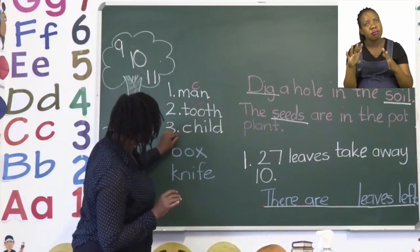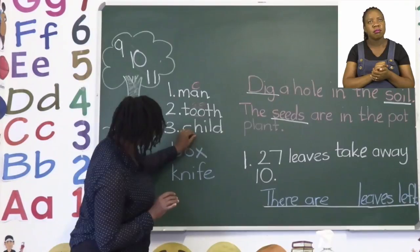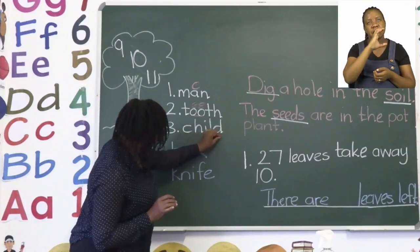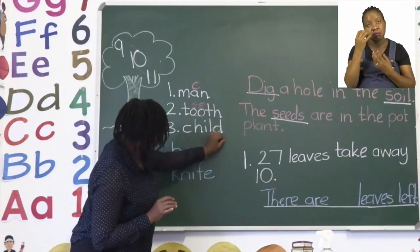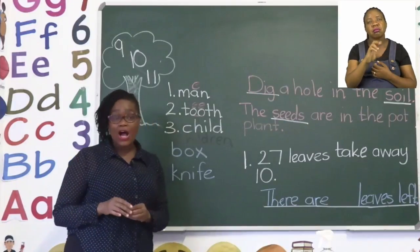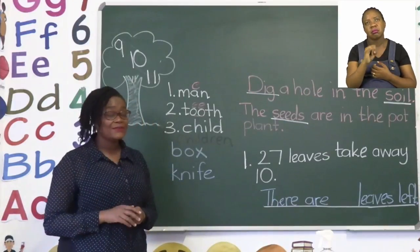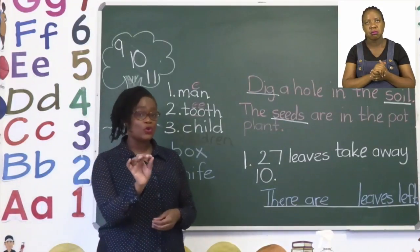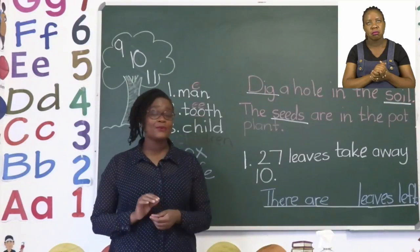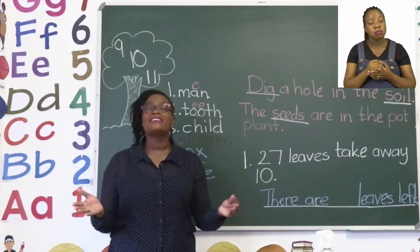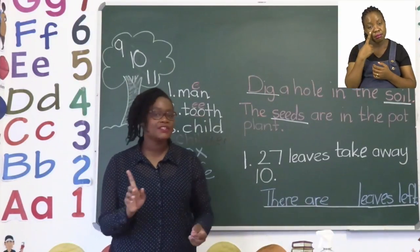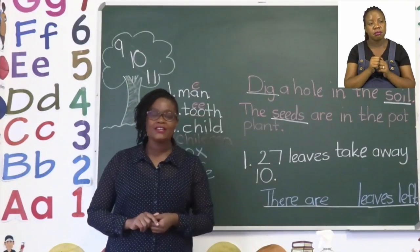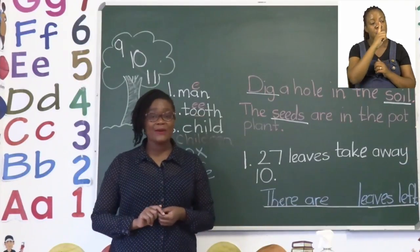So go ahead and write the word children. Good job everyone. That's the help I'm going to give you for that page. For the rest of the exercise, look at the clues you have for the rules and then make sentences by changing the singular into a plural. Take your time with that one.